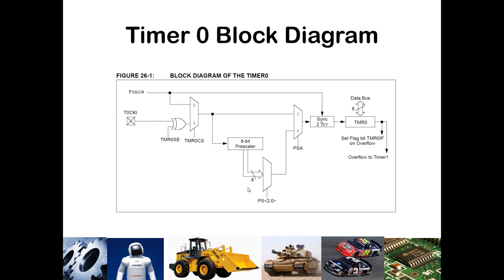Here is the block diagram for the Timer 0 module. T0CKI is an external pin — indicated by an X-in-box symbol in the PIC datasheet. It feeds into an exclusive-OR gate with the edge selection. Depending on the edge chosen, it goes into a multiplexer that selects either the T0CKI external pin or the instruction clock as the TMR0 clock source. The instruction clock is the oscillator frequency divided by 4, so with an 8 MHz crystal, each instruction cycle runs at 2 MHz.